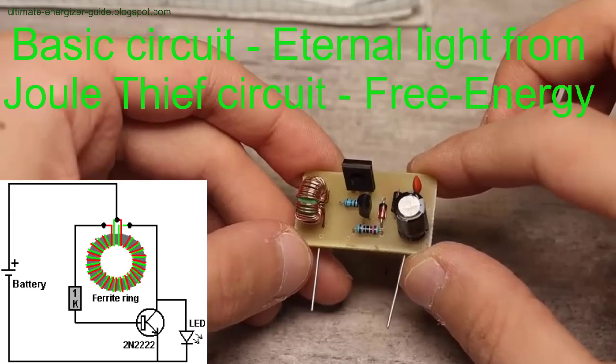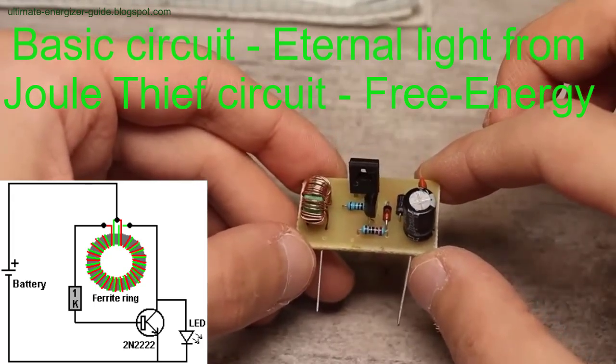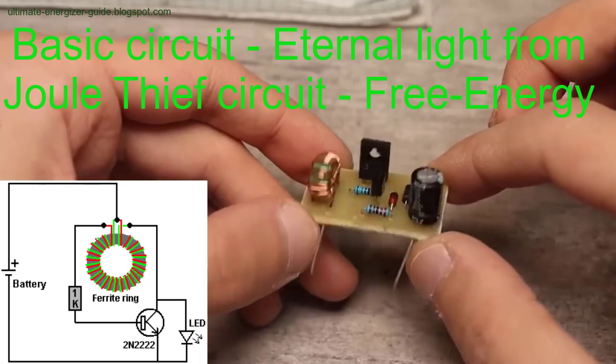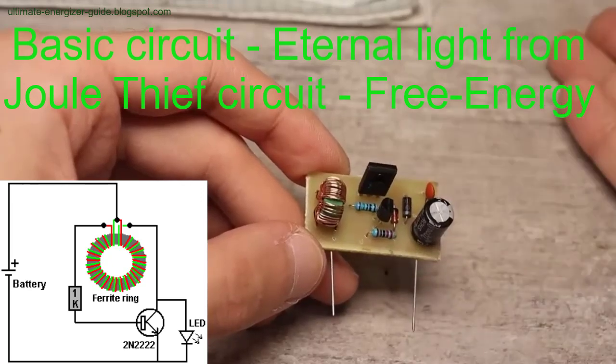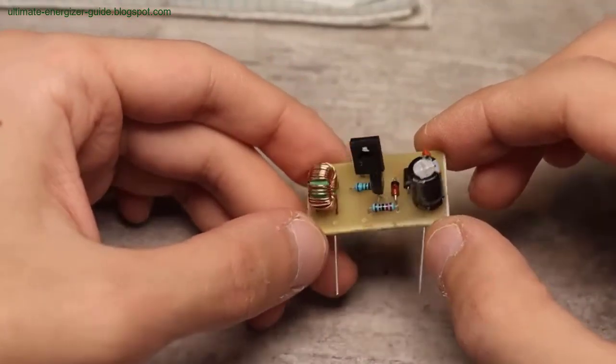This video delves into the working of the Joule Thief circuit, its theoretical underpinnings in ether physics, and the potential of free energy. Understanding mainstream science and free energy: mainstream electrical theory revolves around the behavior of elementary charged particles such as electrons and positively charged holes.